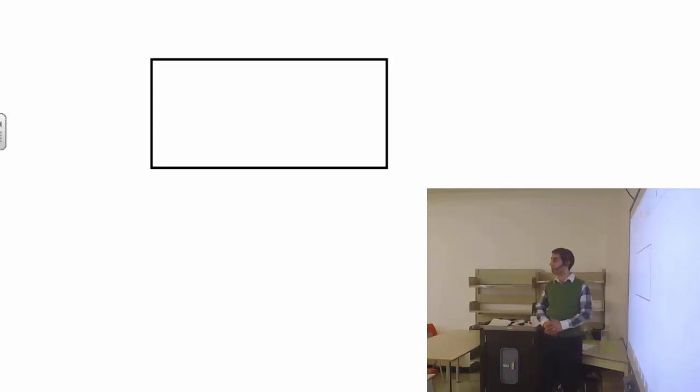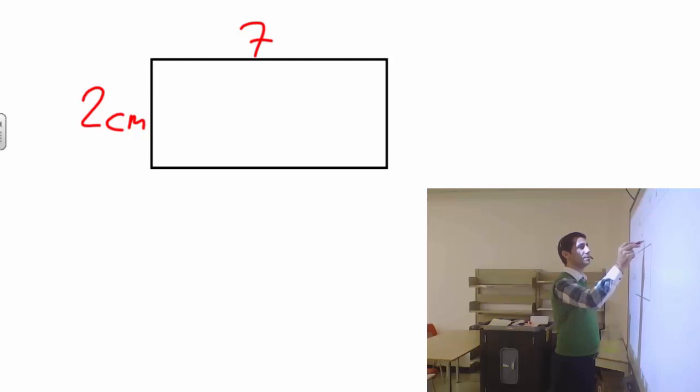Alright, perimeter of the shape. How do you calculate the perimeter of a rectangle? First, the values have to be given to you. Let's say this is 2 cm and that is 7 cm.